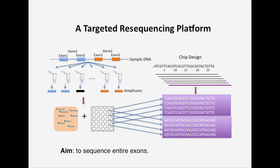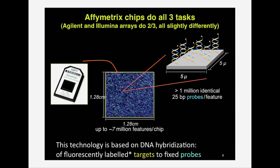Targeted resequencing, typically of exons, means that instead of three possibilities like a SNP, you have ten — four homozygous and six heterozygous. The aim is typically to sequence entire exons. This technology is not terribly widely used, but I've been working on trying to make it more widely used. Then along came sequencing, and nobody cares anymore.